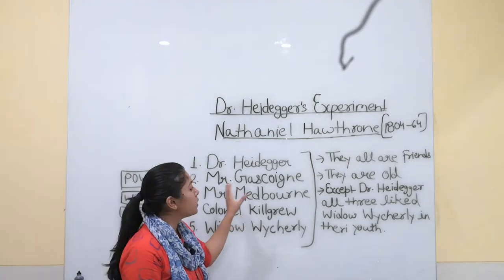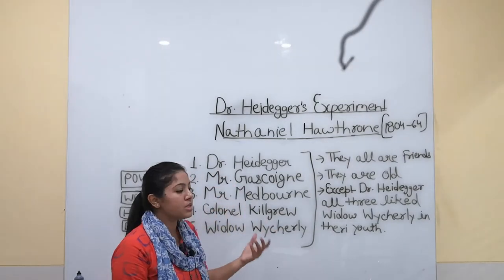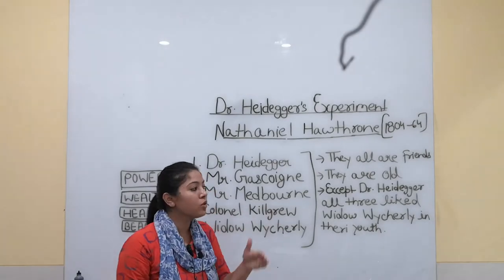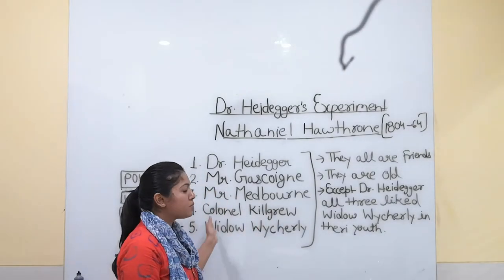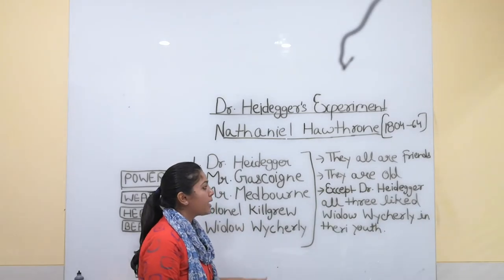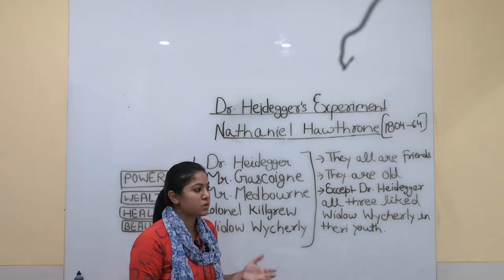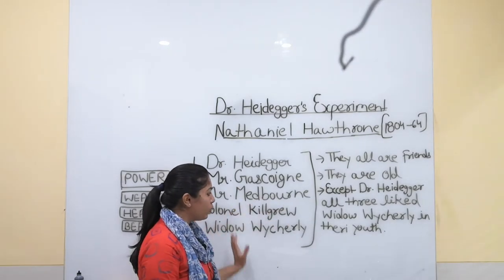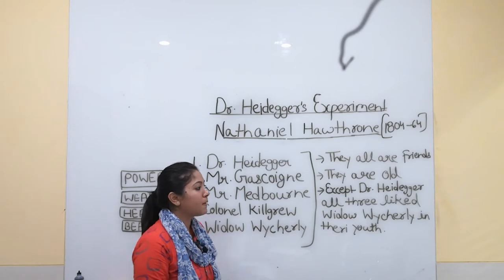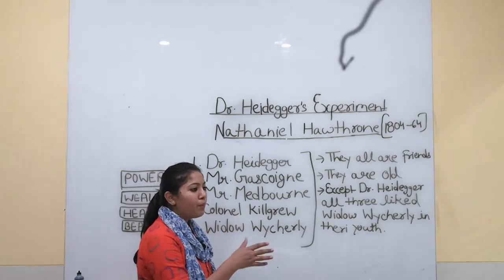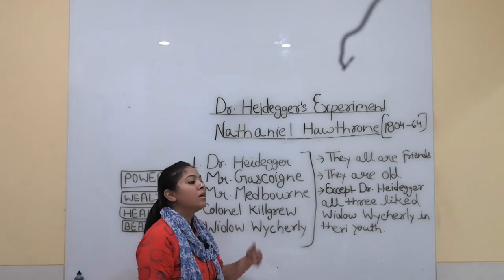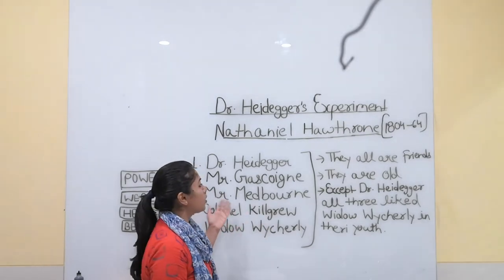Dr. Heidegger invites his four old friends to his house and tells them about his experiment. In his study room there is a mirror, a book about experiments, and a painting of his beloved. The rose was given to him by his beloved 55 years ago, preserved in miracle water. He shows them the rose, which had become fresh again. Dr. Heidegger says this water can take you back to your youth.